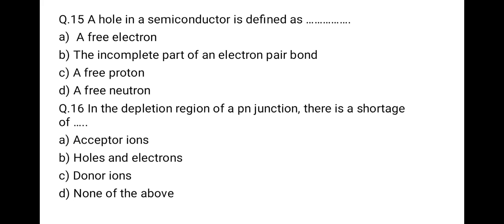The next question: a hole in a semiconductor is defined as what? The correct option is the incomplete part of an electron pair bond, meaning a hole is the absence of an electron.